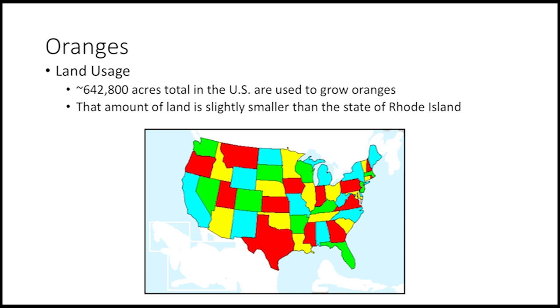About 642,800 acres of U.S. land are used to grow oranges. That's slightly smaller than the state of Rhode Island.